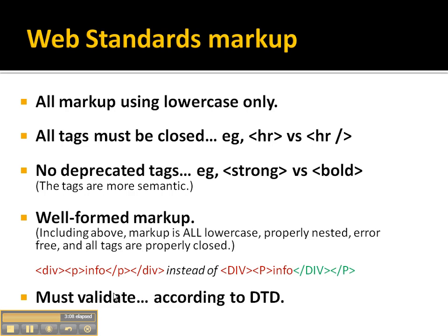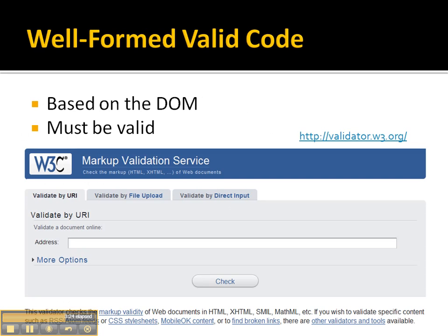In order to check all of this and make sure that all these rules are adhered to, we have to validate the code as well, according to the document type definition, or the document object model, that we specified in our document. We can actually do this on the website validator.w3.org, which is the markup validation service, and we can input our code by URL, or we can use direct input where we just copy and paste in the code, and it will check it to make sure it's valid.